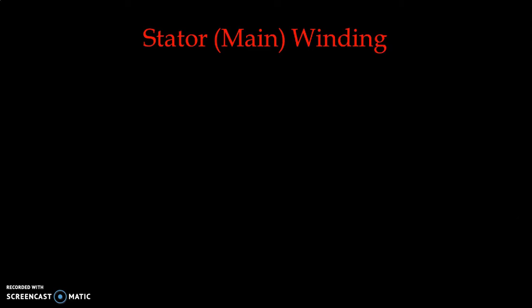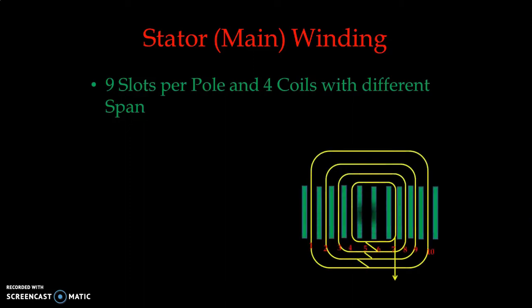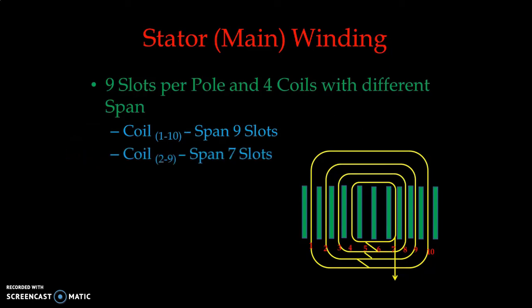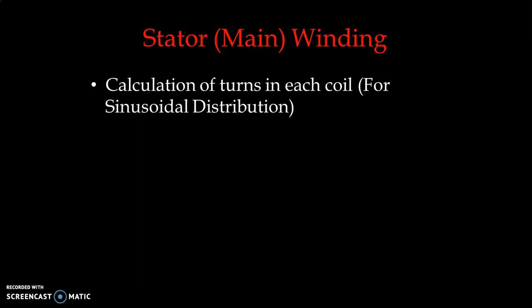These are the outermost coil of the adjacent pole group. Now let us take one stator winding arrangement. We have considered nine slots per pole and four different coils with different span, and we have reproduced our arrangement for ready reference. Coil 110 has a span of nine slots, coil 29 has a span of seven slots, coil 38 has a span of five slots, and the innermost coil 47 has a span of three slots.